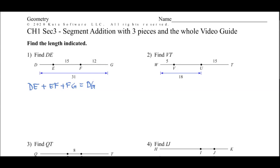What we do know is that EF is 15, FG is 12, and DG is 31. So DE is what we don't know. We're going to use algebra and create a variable X. X plus 15 plus 12 is 27, and that equals 31. 31 minus 27 is 4, so DE has a measure of 4.